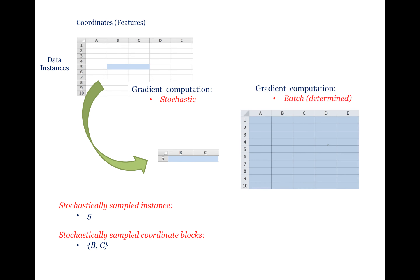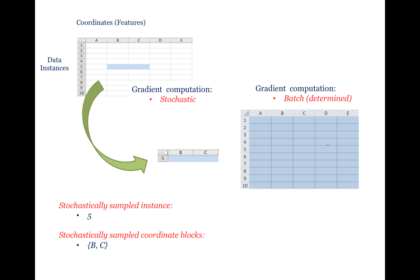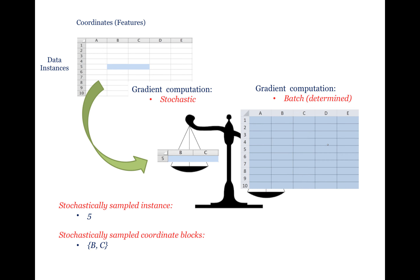In sharp contrast, batch or deterministic algorithms compute gradients based on the entire dataset. So, the computational cost of stochastic block coordinate descent is much lower than that of batch algorithms at each step of optimization on big data sets.